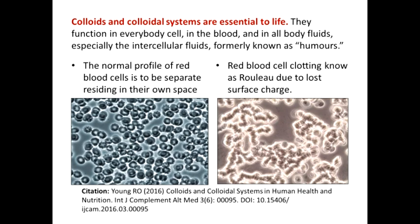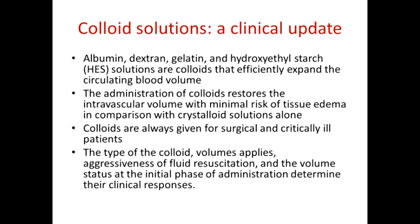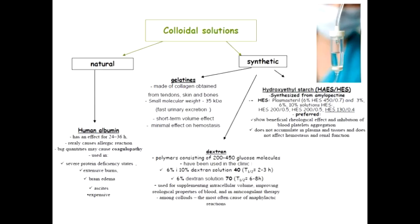Blood is a type of colloidal solution. In the left picture, a normal profile of red blood cells can be seen — all particles are separated from each other. In the right picture, the result of a blood cell colloidal aggregation process similar to coagulation is shown. Colloidal solutions are widely used in medical practice, with many medicines having particles of colloidal size.